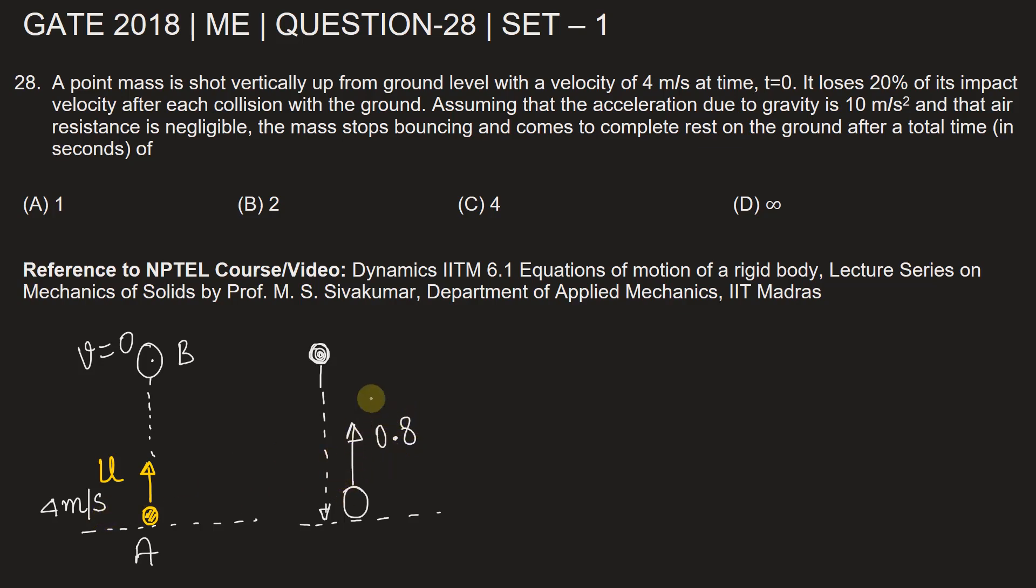So if I say this ball is going up after collision, let's say this is point C. So this velocity will be u, let's say u2 will be equal to 0.8 times u1.